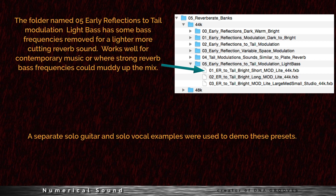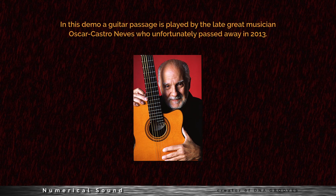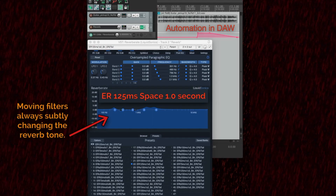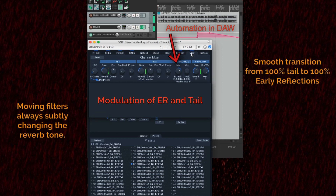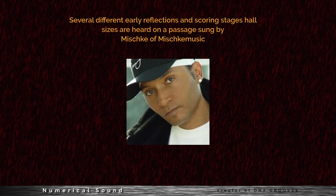The folder named 05 Early Reflections to Tail Modulation Light Bass has some bass frequencies removed for a lighter, more cutting reverb sound. It works well for contemporary music or where strong reverb bass frequencies could muddy up the mix. Separate solo guitar and solo vocal examples were used to demo these presets. In this demo, a guitar passage is played by the late great musician Oscar Castro-Neves, who unfortunately passed away in 2013.